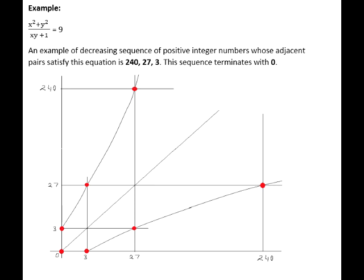This example uses the value of parameter K equals 9. The graph of this equation shows two symmetric branches. Each branch has three lattice points whose coordinates satisfy this equation.